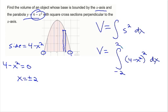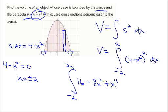Be very careful squaring that binomial. We don't want to make an algebra error. Remember, this is not 16 minus x to the 4th. It is 16 minus 8x squared plus x to the 4th. That's going to be my integral from negative 2 to 2 dx.